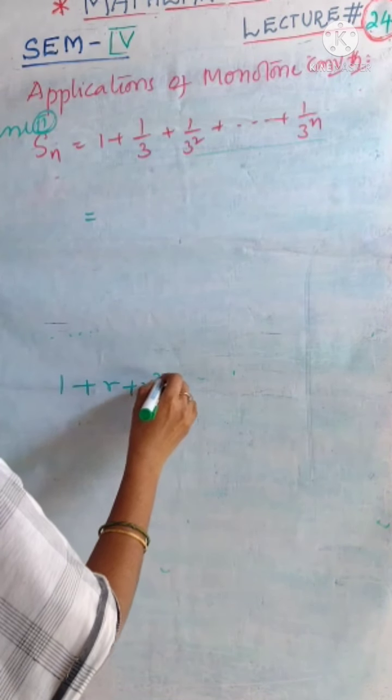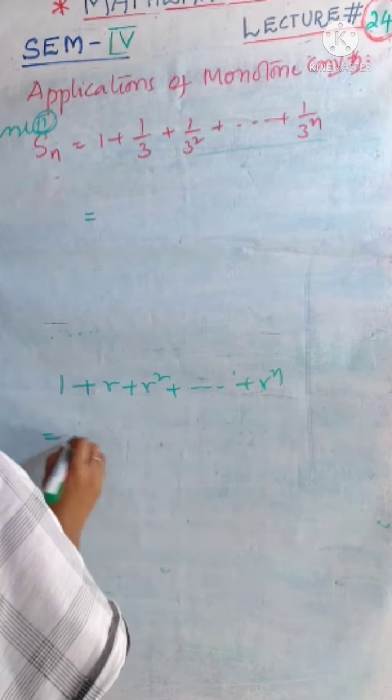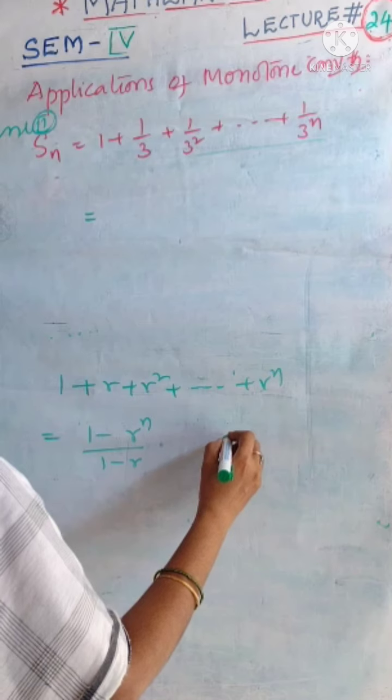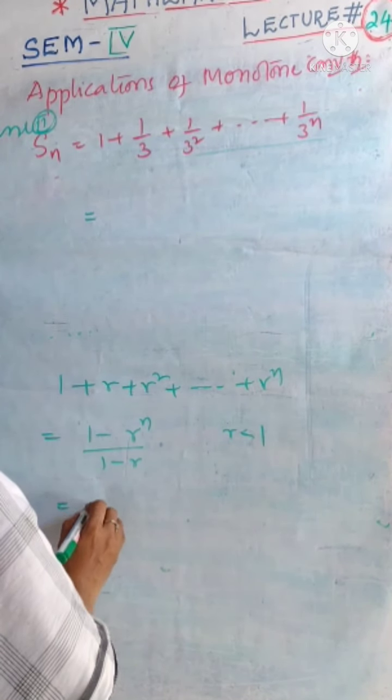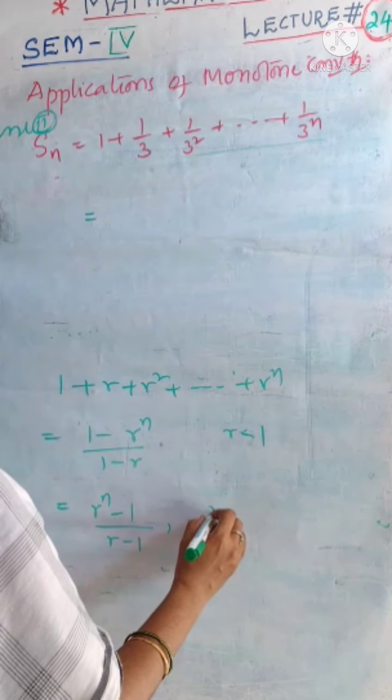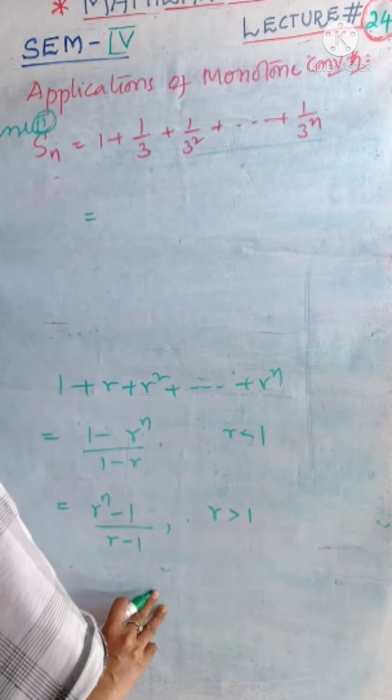1 plus r plus r square and so on r power n. This can be written as 1 minus r power n by 1 minus r, provided r value is less than 1. Or we can write the summation value as r power n minus 1 by r minus 1 if r value is more than 1.